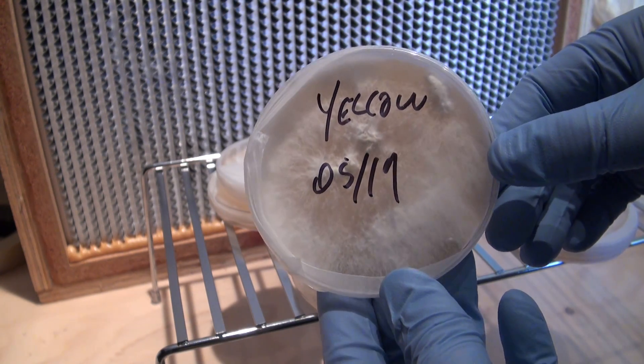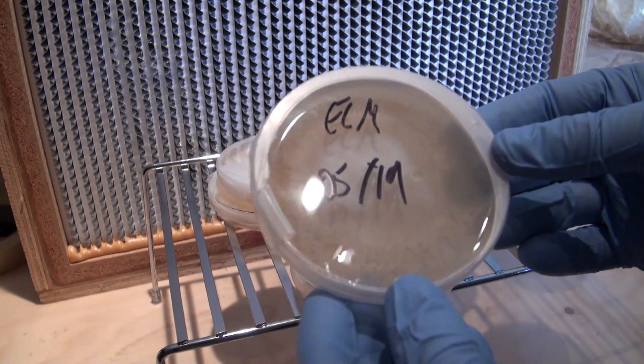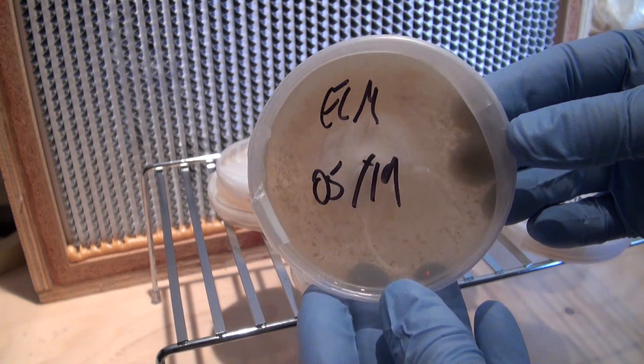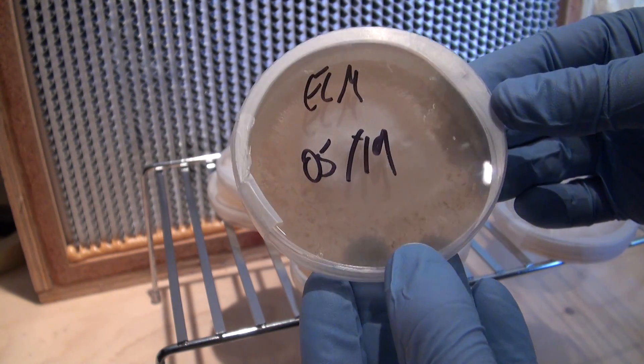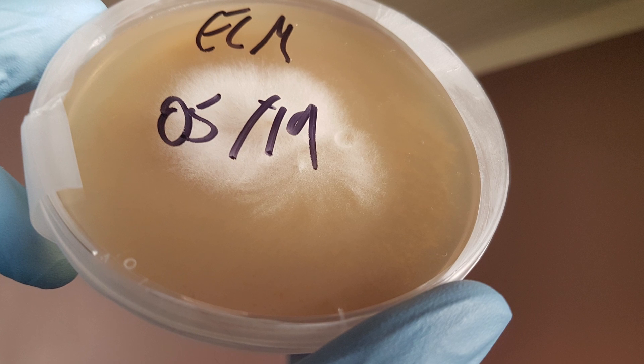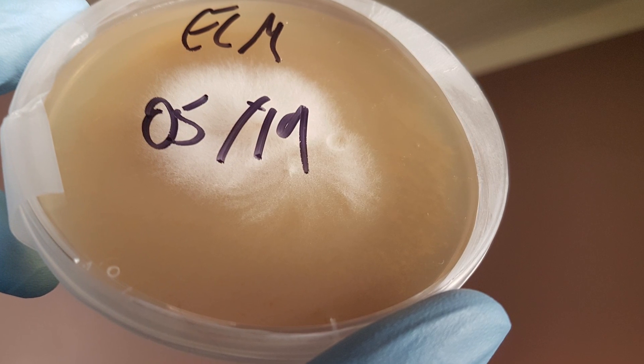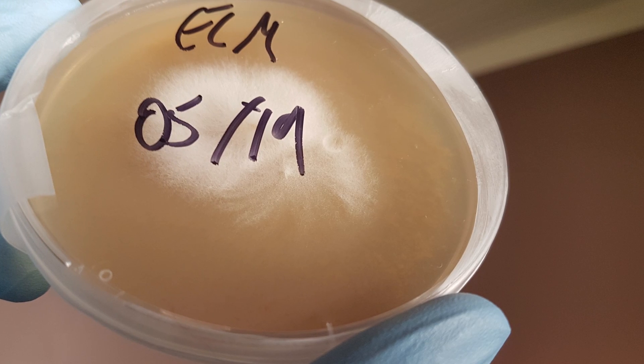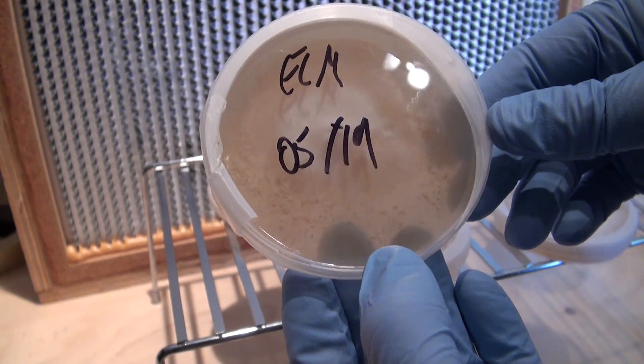Here we have some elm oyster mushroom, so this is just a tree oyster. You can see it's quite a bit slower than the other oyster mushrooms, not entirely sure why that is. But it is growing pretty uniformly and this one I'm going to probably let grow a little more before I transfer it.